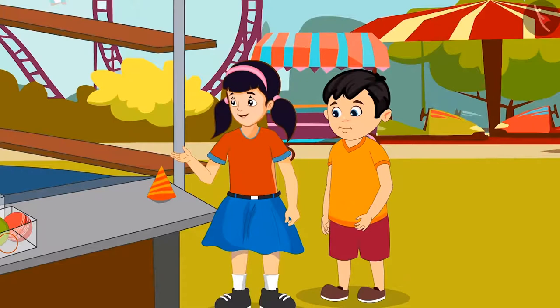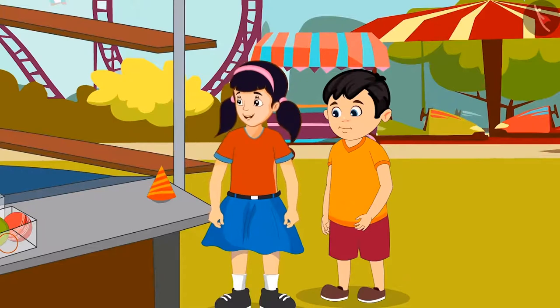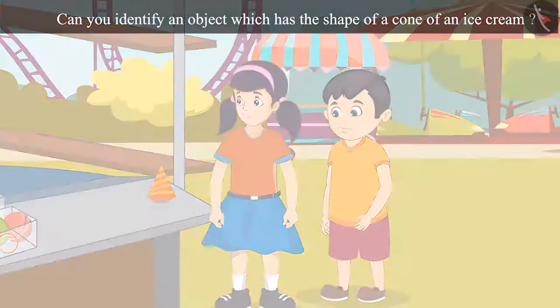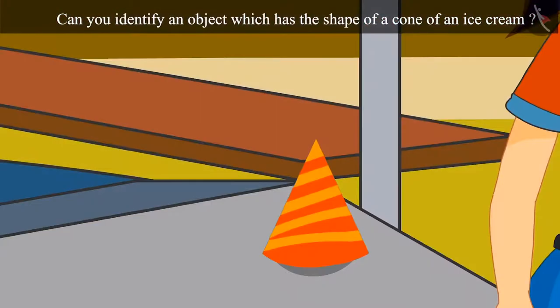Wow, Chotu. Now, I will put the last item. This shape is like an ice cream cone. Children, can you identify an object which has the shape of a cone of an ice cream? You identified it correctly. This is a cone-like object.